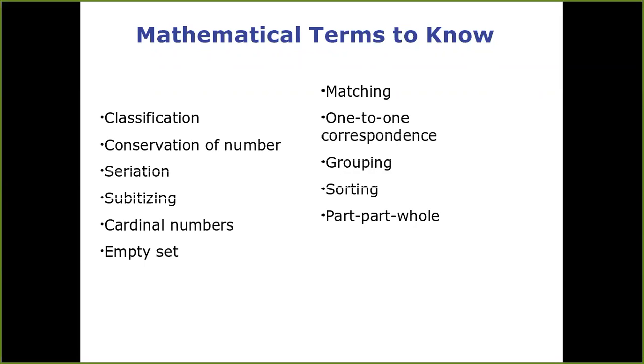One-to-one correspondence is knowing that when we count, there is a number and only one number for each thing we count. So one, two, three versus one, two, three, four, five, six, seven, eight, nine.